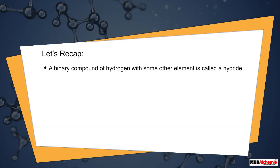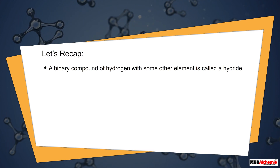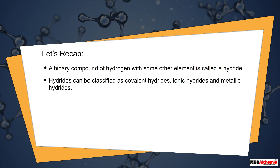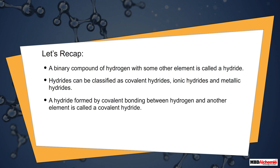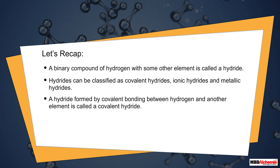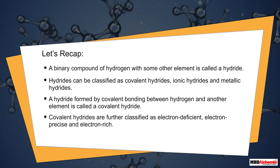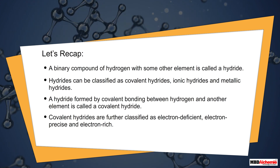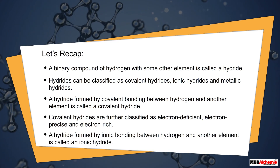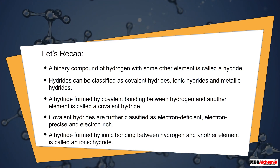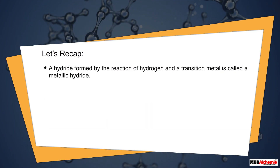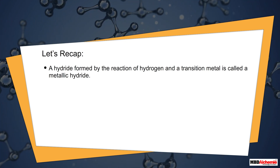To recap: a binary compound of hydrogen with some other element is called a hydride. Hydrides are classified as covalent hydrides, ionic hydrides, and metallic hydrides. Covalent hydrides are further classified as electron deficient, electron precise, and electron rich. A hydride formed by ionic bonding is called an ionic hydride, and a hydride formed by the reaction of hydrogen with a transition metal is called a metallic hydride.